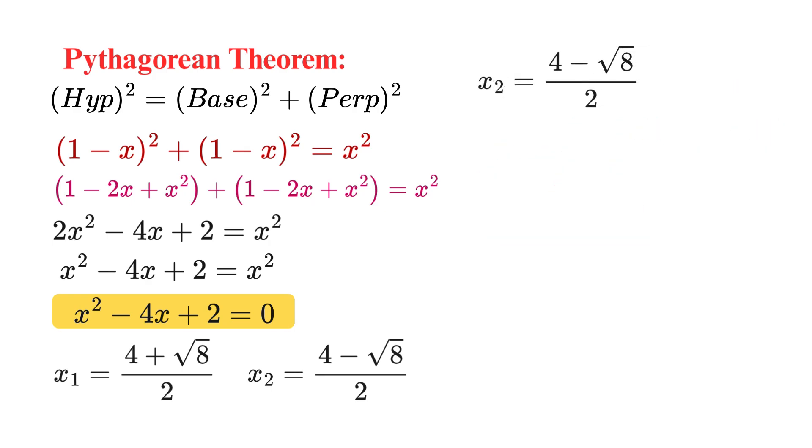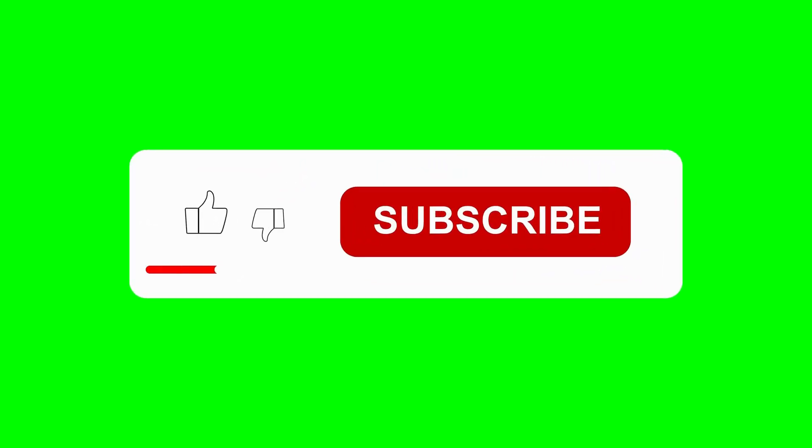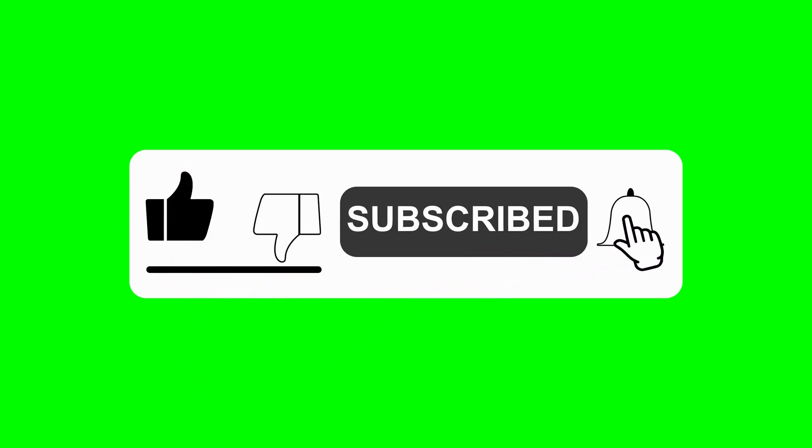Alright, now let's work with our second solution. That is, x₂ = (4 - √8) / 2. By solving this, we get x₂ = 2 - √2. And there we have our final answer that the length of one side of the hexagon is 2 minus the square root of 2. I hope you enjoyed the video. If you found something interesting, don't forget to like the video and subscribe to our channel for more.